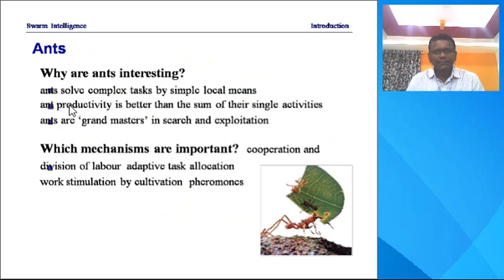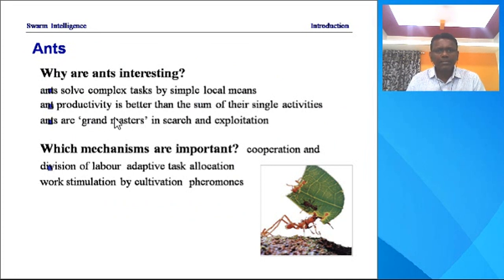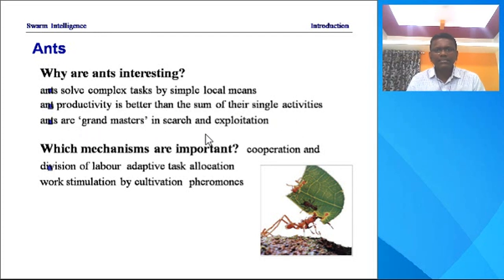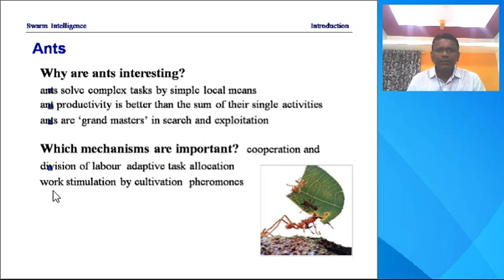Which mechanisms are important? Cooperation and division of labor, adaptive task allocation, work stimulation by cultivation phenomena. What are the principal mechanisms of natural organization? Self-organization is the very important characteristic of these biological insects.